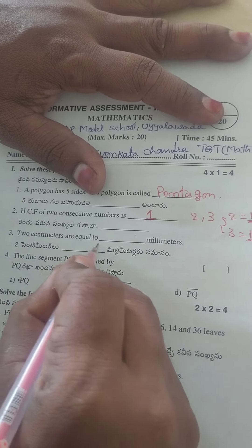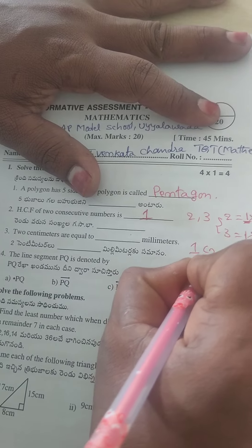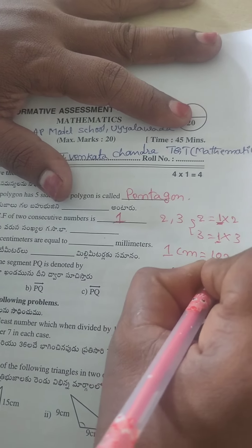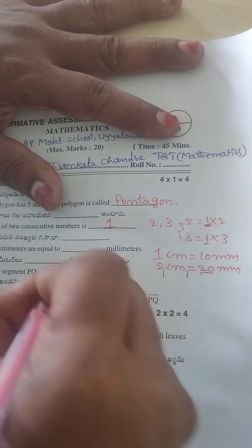Two centimeters are equal to dash millimeters. One centimeter equals ten millimeters. Then two centimeters equal to 20 millimeters. So answer is 20.